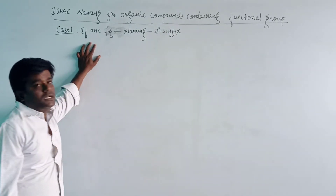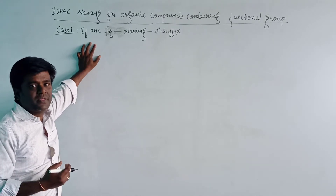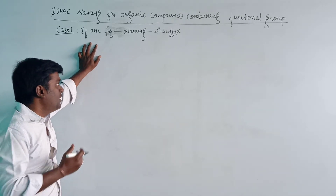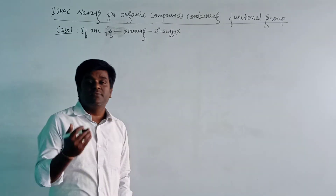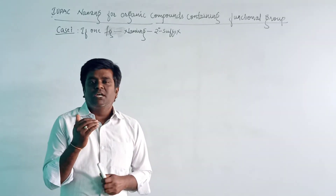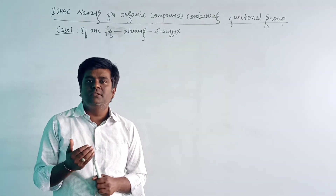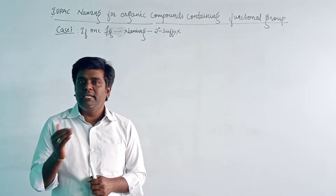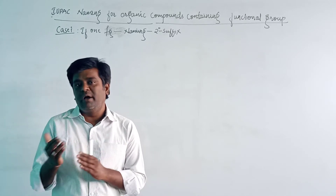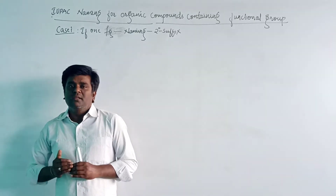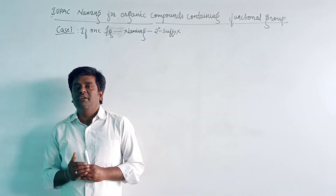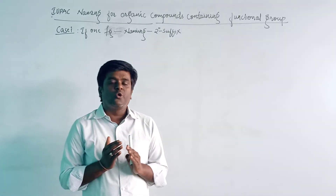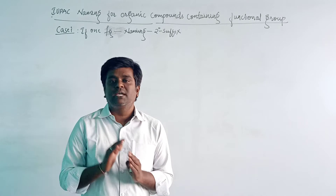The secondary suffix indicates the functional group. For alcohol, the secondary suffix is OL. For aldehyde, we will use AL. For ketones, we will use ONE. For amines, we use amine. For nitriles, that is cyanide, we use the secondary suffix nitrile. For carboxylic acid, we use oic acid.